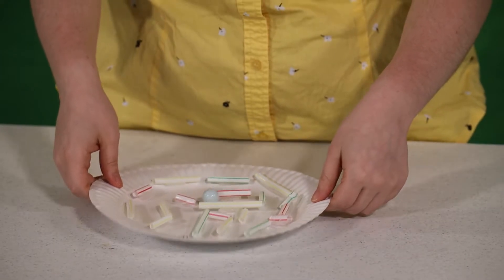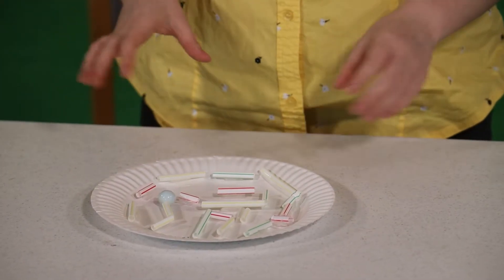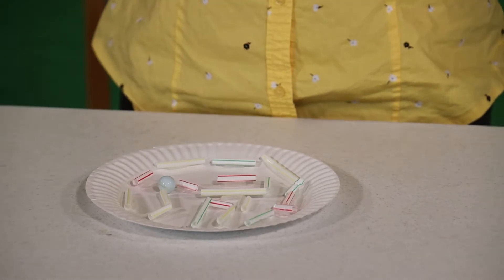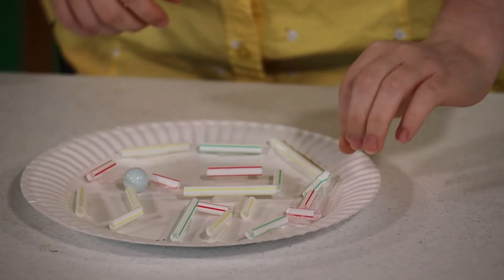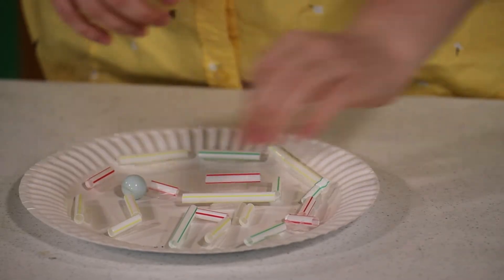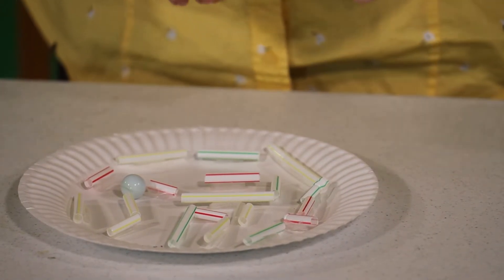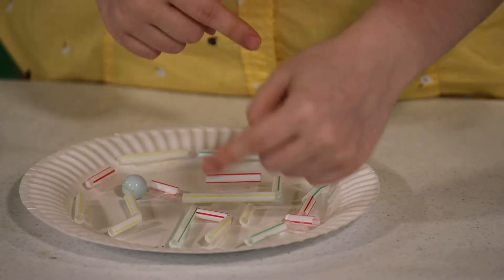So the first thing to do is get your paper plate out, get a pencil or marker, and draw out the length of your maze and all of the different parts and how long you want each line to be.